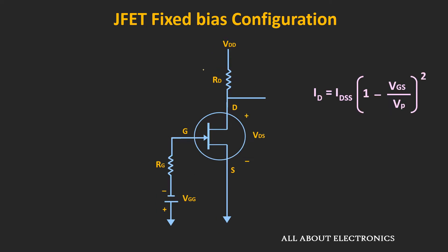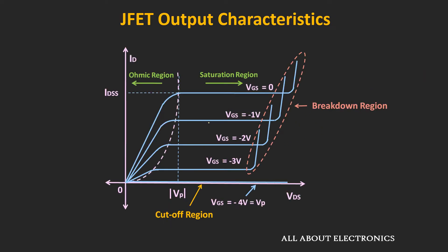On the other hand, the fixed bias configuration requires two power supplies — one must arrange a negative power supply as well. Furthermore, the drain current ID is directly related to the voltage VGS. So if VGG changes, the drain current ID and voltage VDS will change, meaning the operating point of the fixed bias configuration will shift. Similarly, due to external parameters, if the drain current ID changes, the operating point will change in either direction.